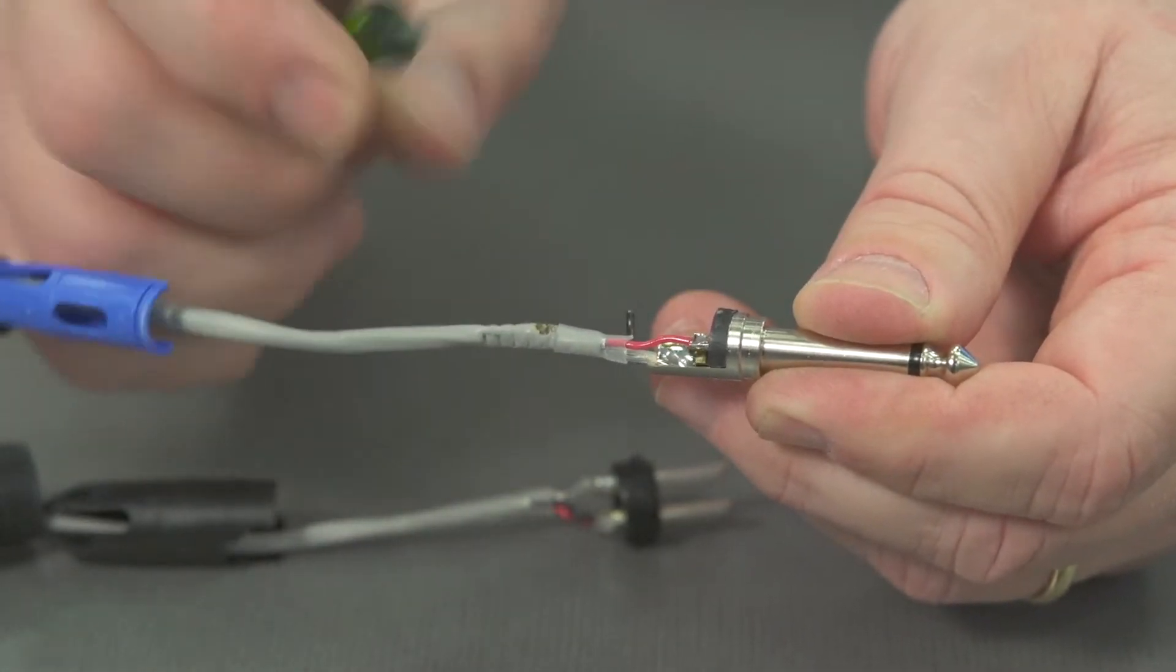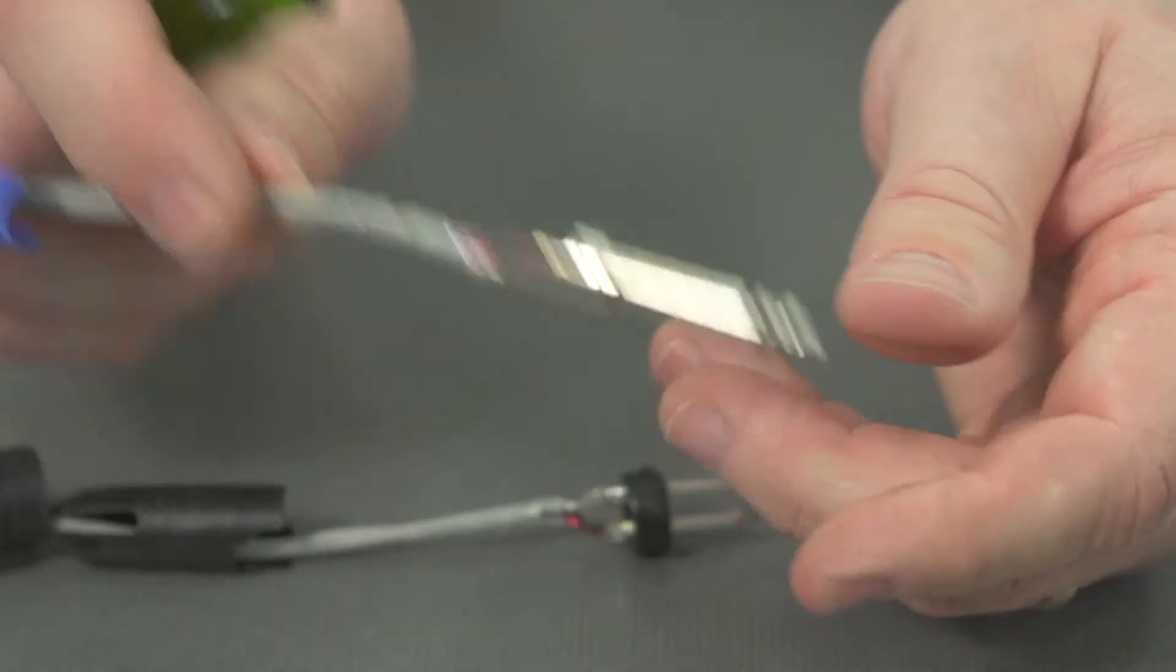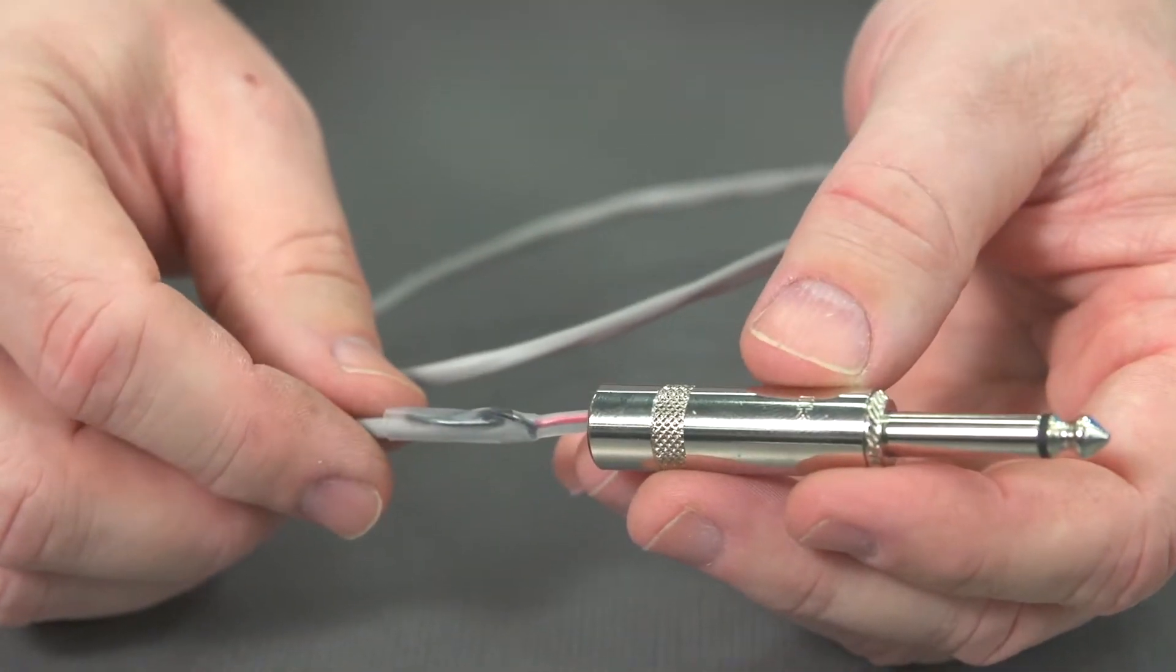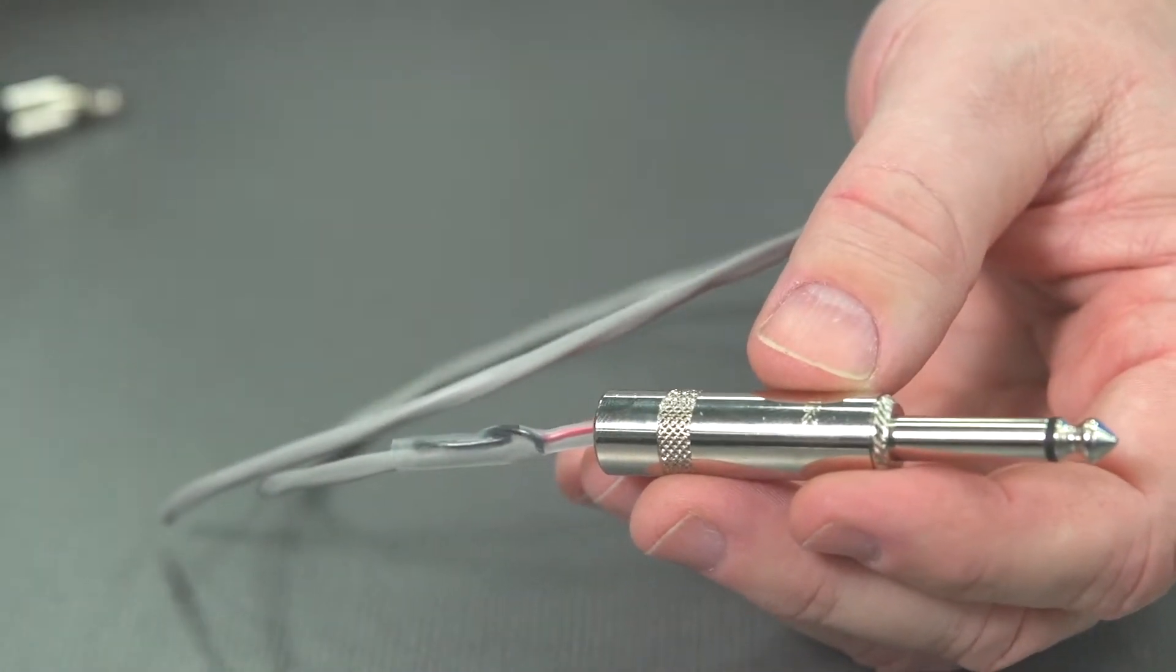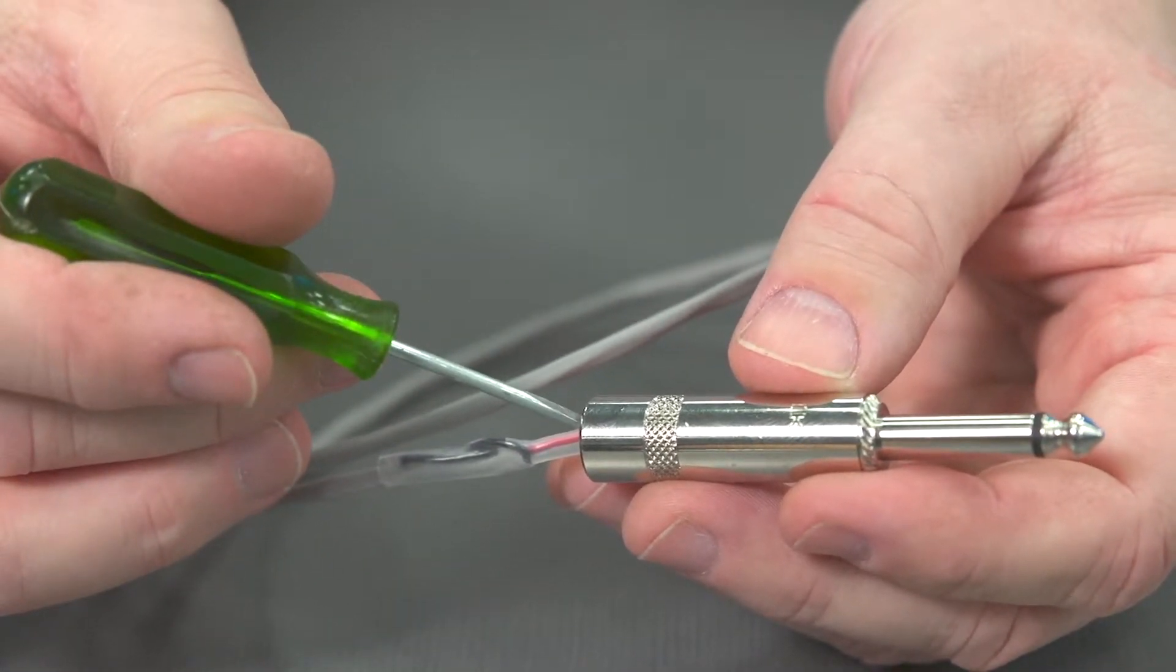The jacket's a little close, but obviously that termination could use a little more work. Let's look at some others here. Here's a quarter-inch tip sleeve, and the first thing that you notice is the jacket isn't even making it up into the body of the connector.